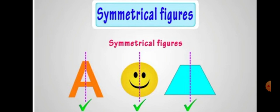Next is a smiley. Here also, when we overlap one part to the other, one half completely covers the other half. So it means it is also symmetrical.